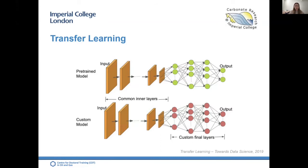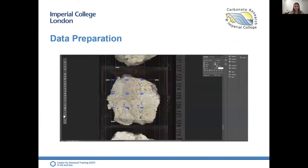We don't need to retrain the entire model — the base convolutional network already contains features generically useful for classifying images. However, the final classification layers are specific to the original task, so we remove those and add a new classifier trained from scratch on our own data. Since quite a few different models have been developed since the challenge started in 2010, we systematically investigated nine different openly available CNNs across four different architectures on a dataset of carbonate core images.